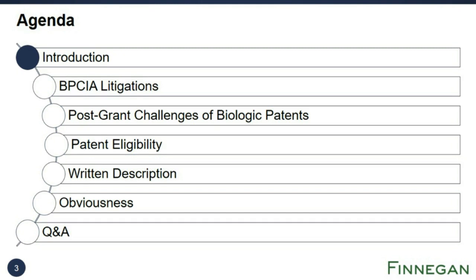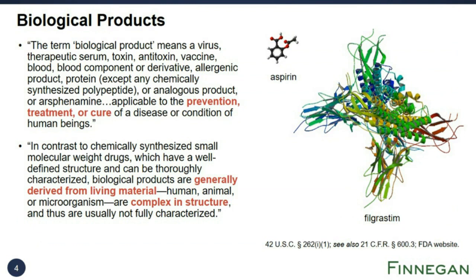A biological product is defined by statute and regulation as a virus, toxin, antitoxin, vaccine, blood, protein, or other such product applicable to the prevention, treatment, or cure of a disease or condition. The FDA reports that in contrast to small molecule drugs, biologics are generally derived from living material and are complex in structure. As shown on this slide, the structure of the biologic filgrastim is larger and more complex than that of the small molecule drug aspirin. In fact, filgrastim is shown as only five times larger, where in reality it is about 100 times larger.